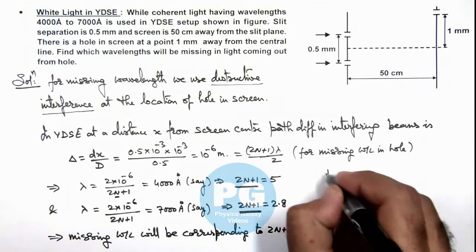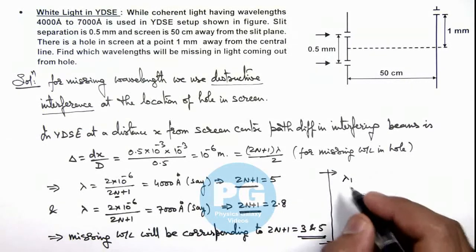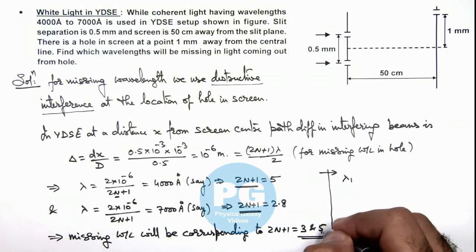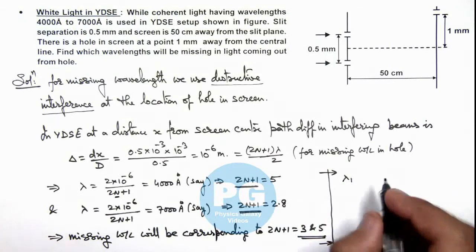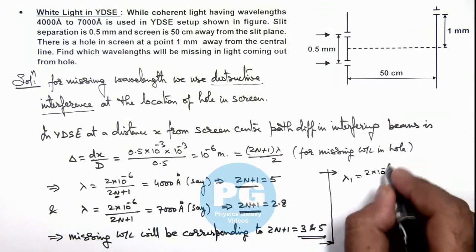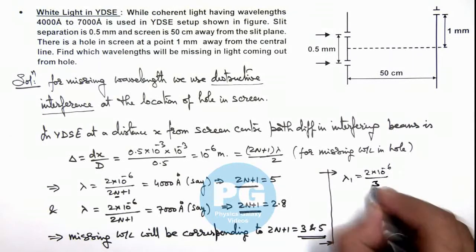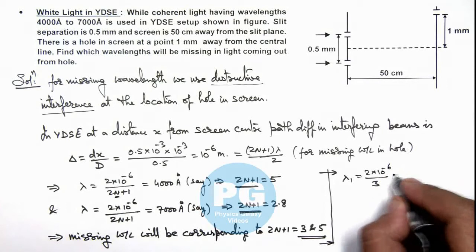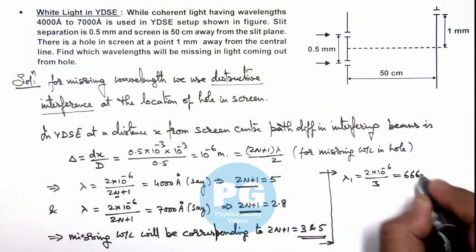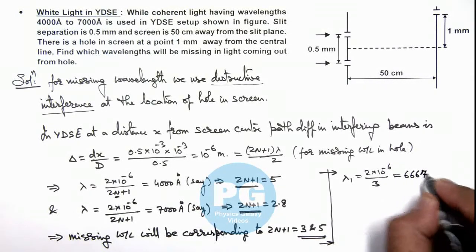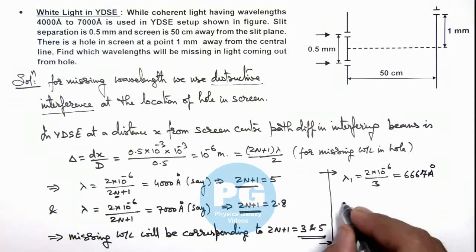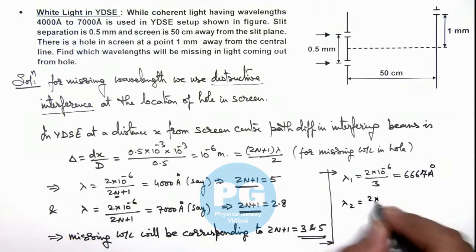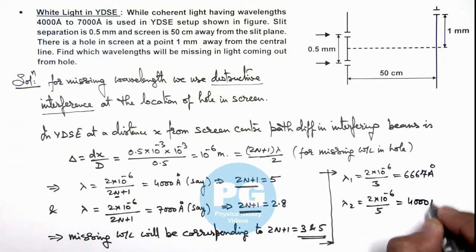Here we can continue and get the value of λ₁, which is 2 × 10⁻⁶ by 3, which equals 6667 angstrom. And the other wavelength is 2 × 10⁻⁶ divided by 5, which is 4000 angstrom.